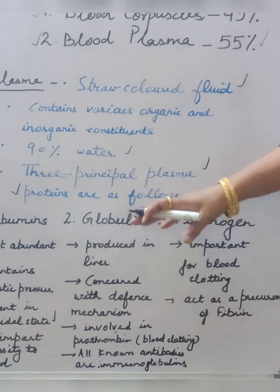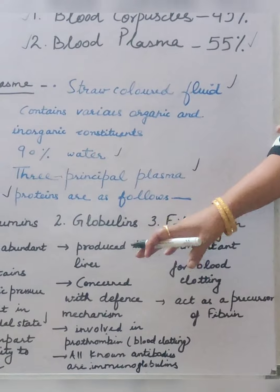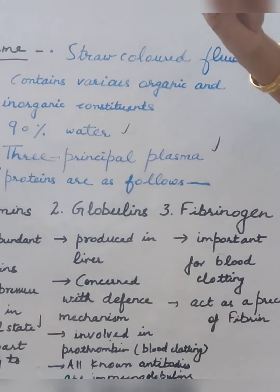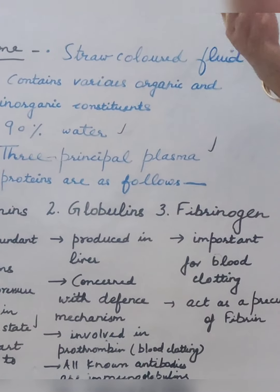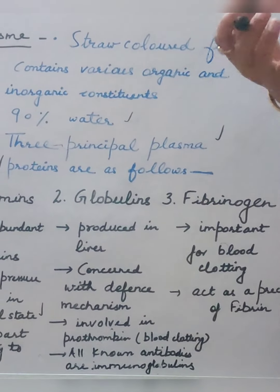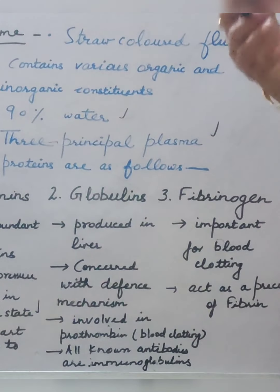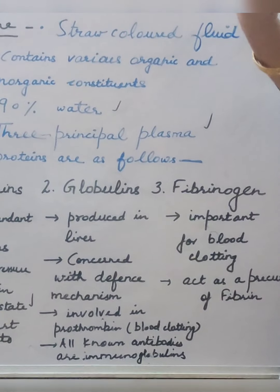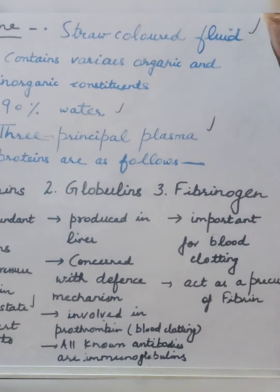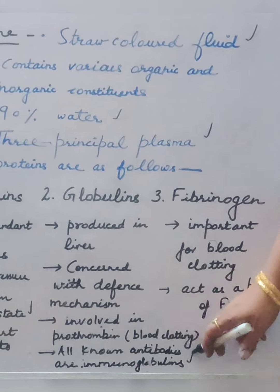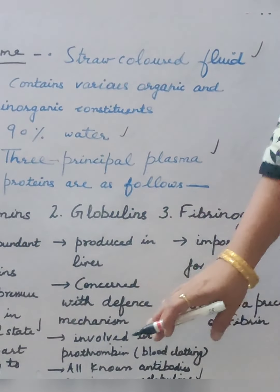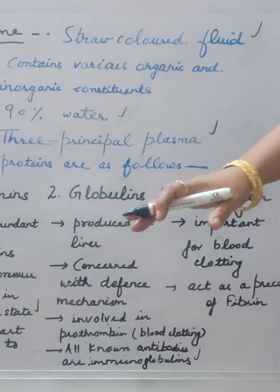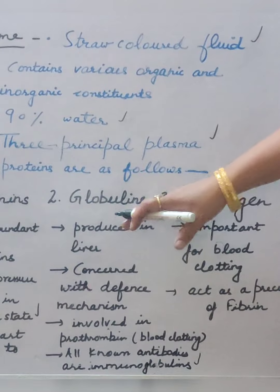Second is globulin. These are produced in the liver and are concerned with the defense mechanism. If any antigen enters the body, then our body fights against that antigen with the help of immunoglobulins — immunoglobulins in the form of antibodies. All antibodies produced by the body are called immunoglobulins. Globulins are also involved in prothrombin, which is an important blood clotting factor.